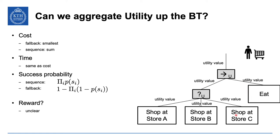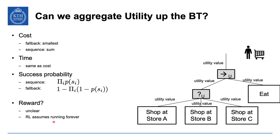For rewards, it's less clear how to aggregate up the tree. The reward for a subtree represents expected accumulated future reward for just those actions — but then we combine that with going to eat afterward, and the utility from eating until the end of time becomes unclear to combine with the rest of the tree. RL assumes running forever in the basic case, and picking a horizon adds further ambiguity.